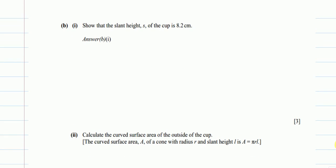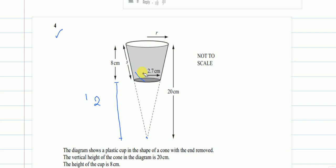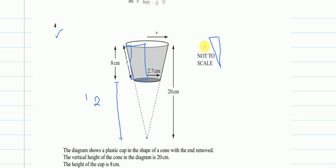Now for part B1: show that the slant height s of the cup is 8.2 centimetres. Whenever we have a slant height question, we solve it using the Pythagoras theorem. Looking at the diagram, I draw the right-angle triangle: s is the hypotenuse, one side runs from the bottom radius 2.7 to the top radius 4.5.